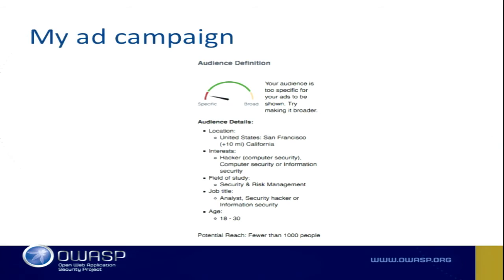You used to be able to target by slash 32 — you could target one IP address inside some of these platforms. I used to mess with coworkers all the time. I'd put an ad targeting our NAT address that came out of the internet and I'd target one of my coworkers and say 'Dave, get back to work, stop looking at Facebook.' You can figure out what sites they're commonly going to and throw some interesting ads for those folks.